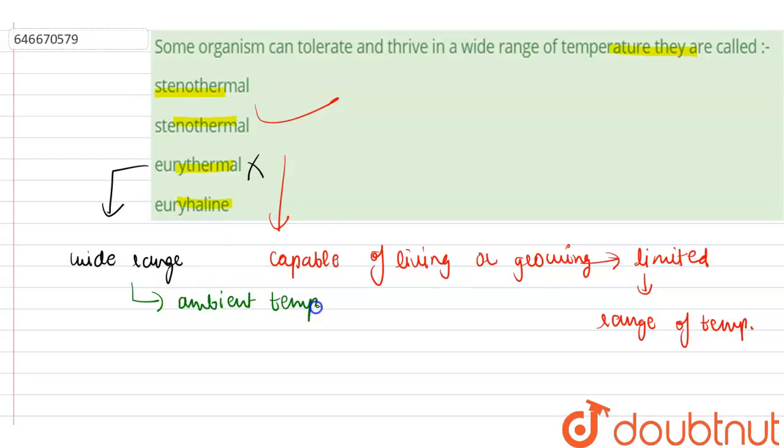And euryhaline are the organisms which can tolerate wide range of salinity. So the correct option here is stenothermal.